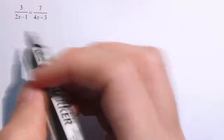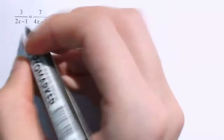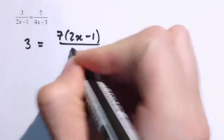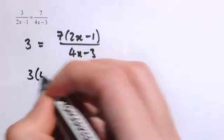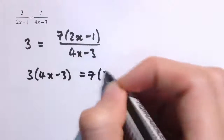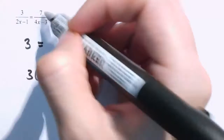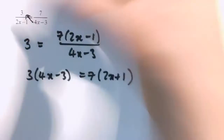It's getting a little bit harder. We've got two different things in denominators in this equation, so I'm going to multiply by each of them. Let's start by multiplying by 2x minus 1 to clear the denominator on the left-hand side. Then we get 3 equals 7 times 2x minus 1, all divided by 4x minus 3. Now we multiply both sides by 4x minus 3, giving 3 times (4x minus 3) equals 7 times (2x minus 1).